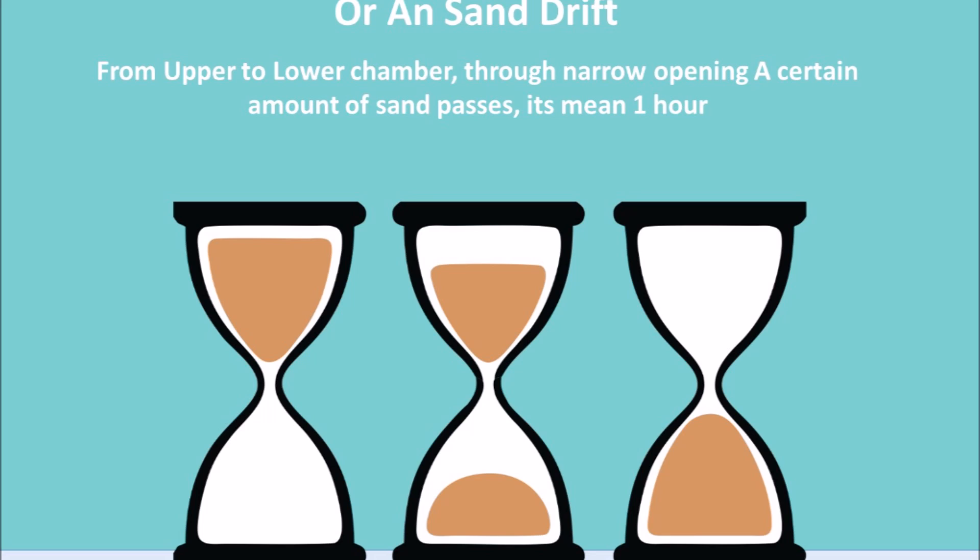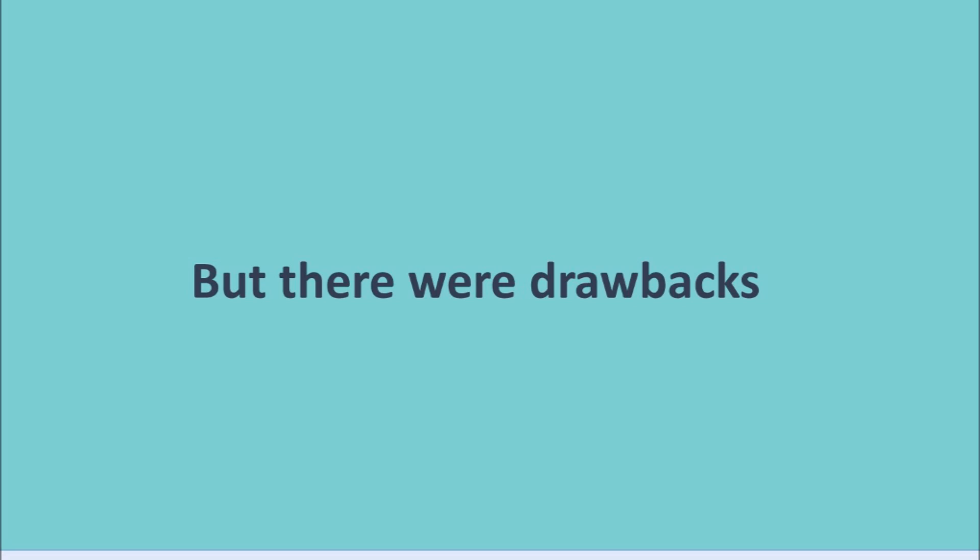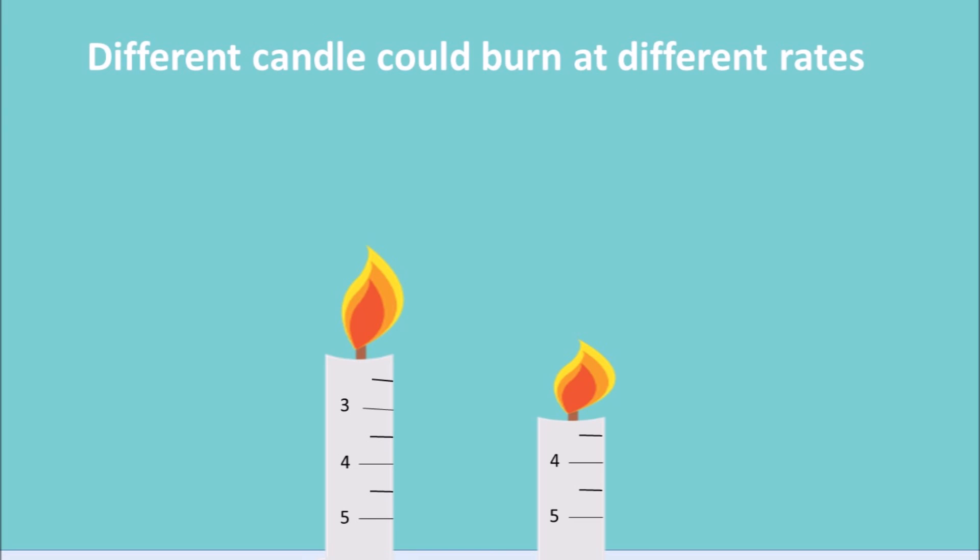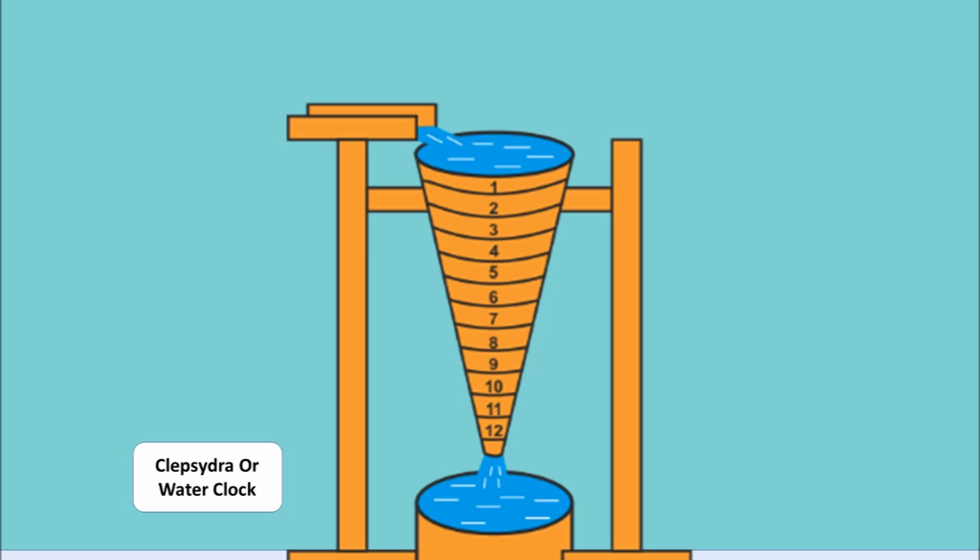These devices were also portable and not dependent on light, but there were drawbacks. Candles could burn depending on amount of air current. Also different candles could burn at different rates. So it could be used to measure time only after it gets empty completely.